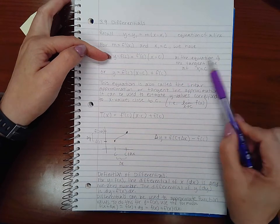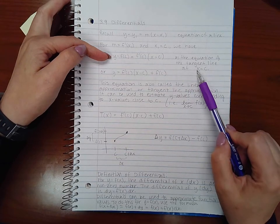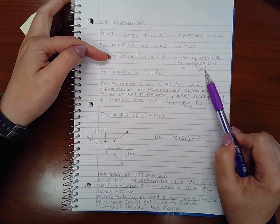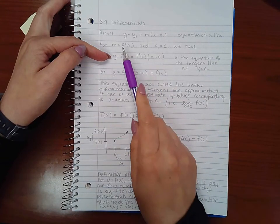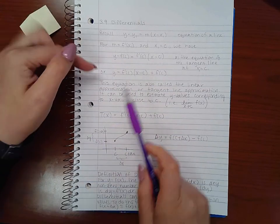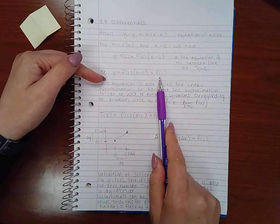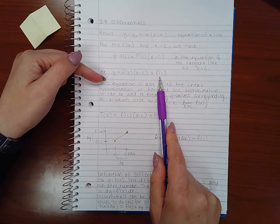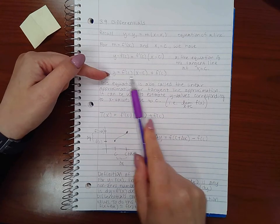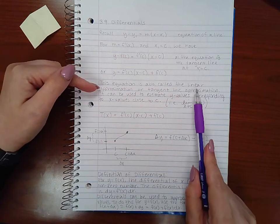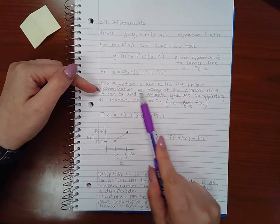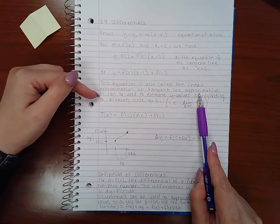Because remember, using the derivative to find the slope, that means that's the tangent line. Now if I move the f of c over to the other side by adding it on both sides of that equation, you end up with this equation here. This equation is called the linear approximation or the tangent line approximation.